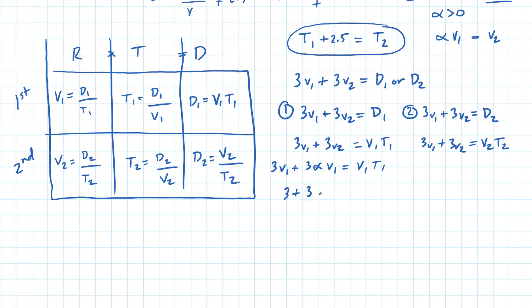Here I'm going to substitute again, so you can see this in red, just so I can see a little better. 3 V1 plus 3 alpha V1 equals alpha V1 T2.